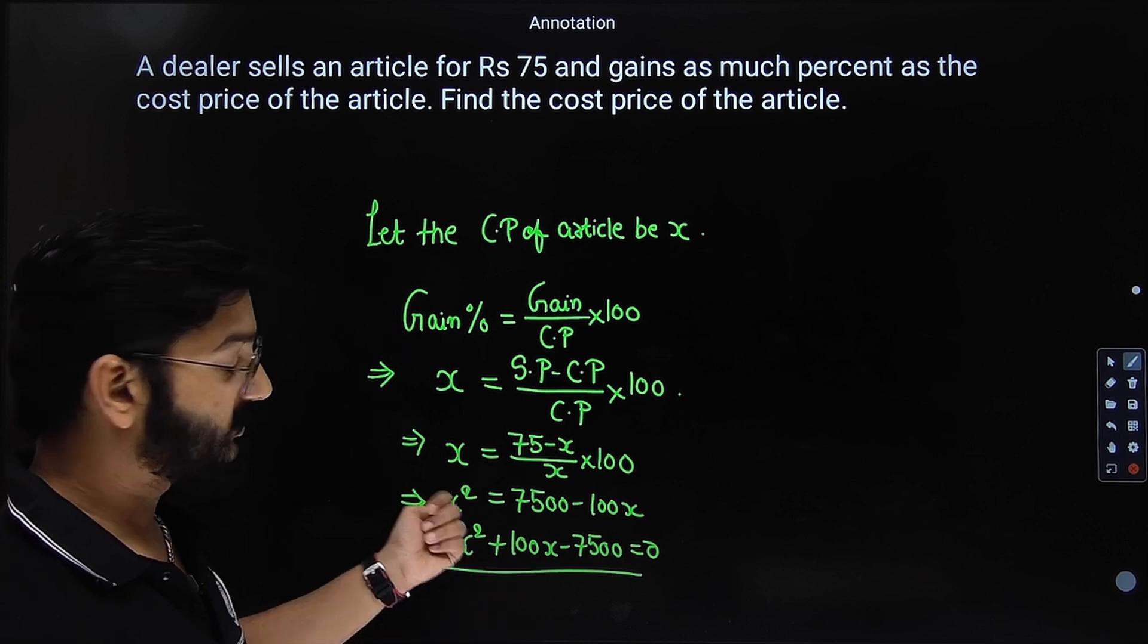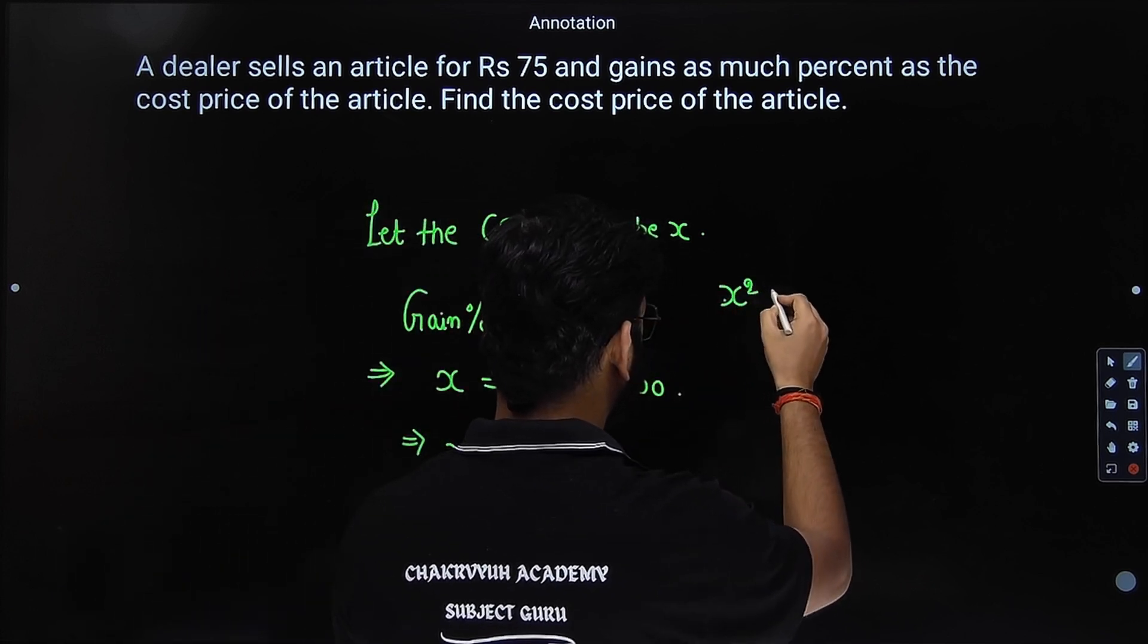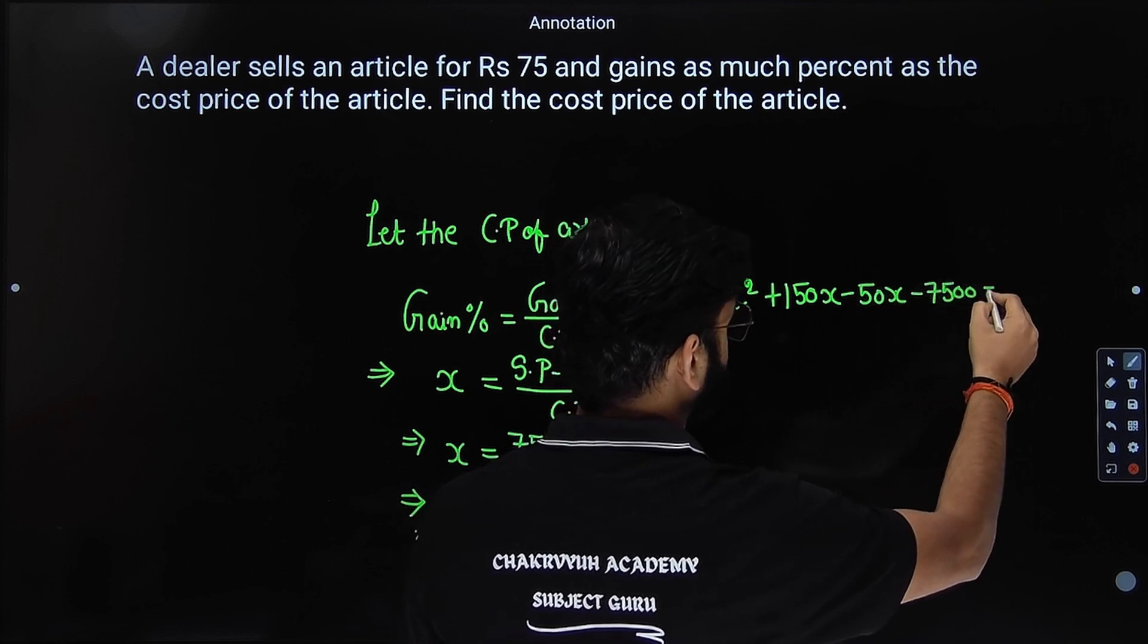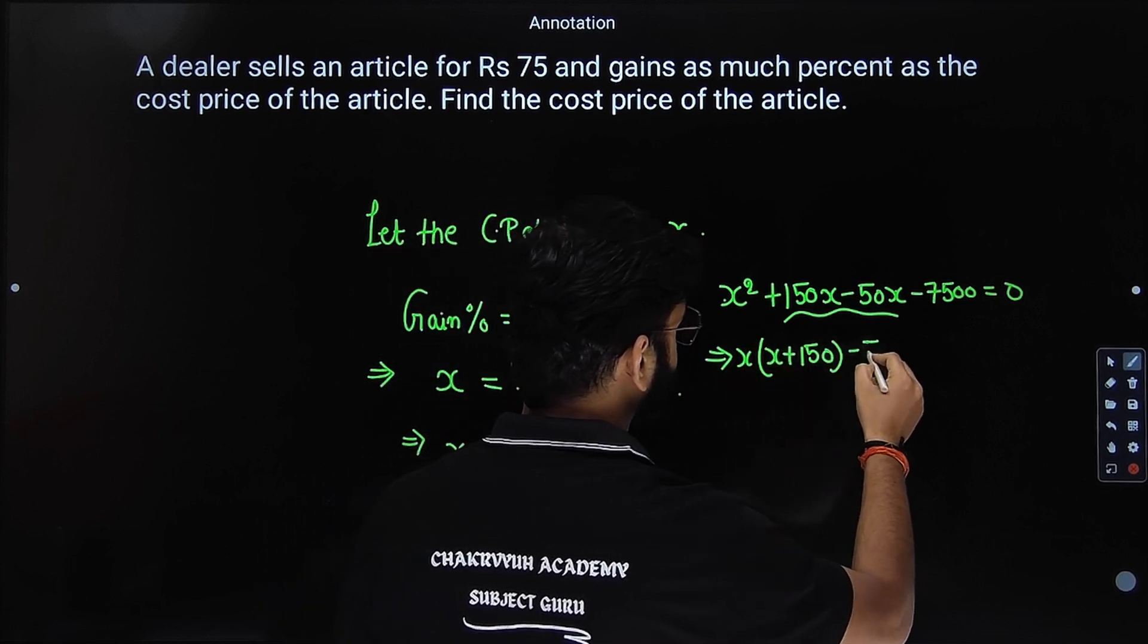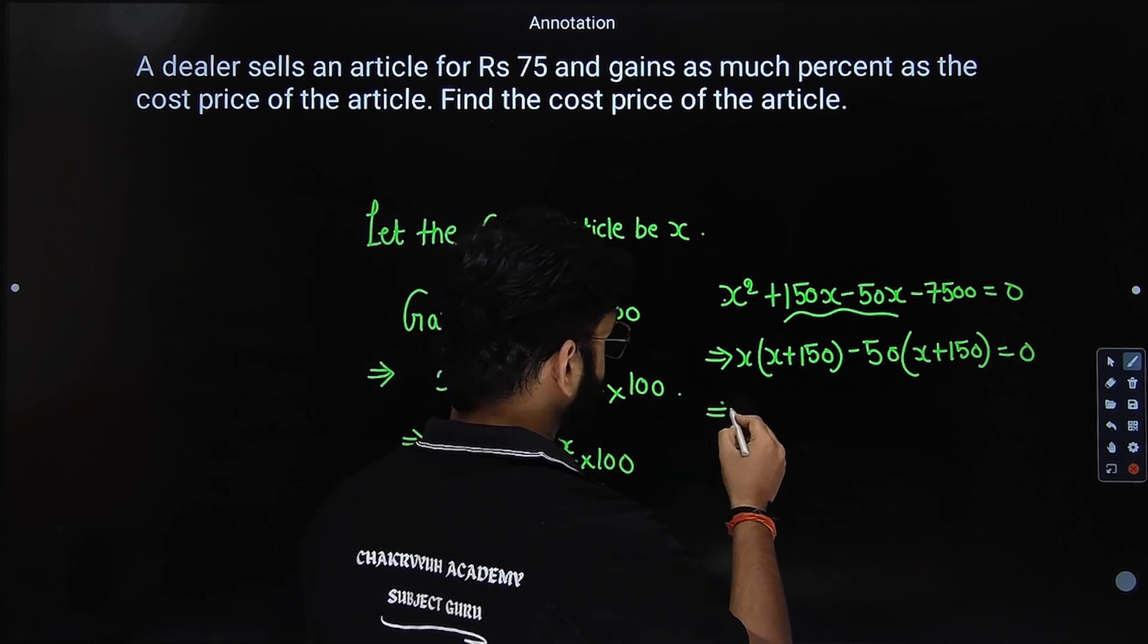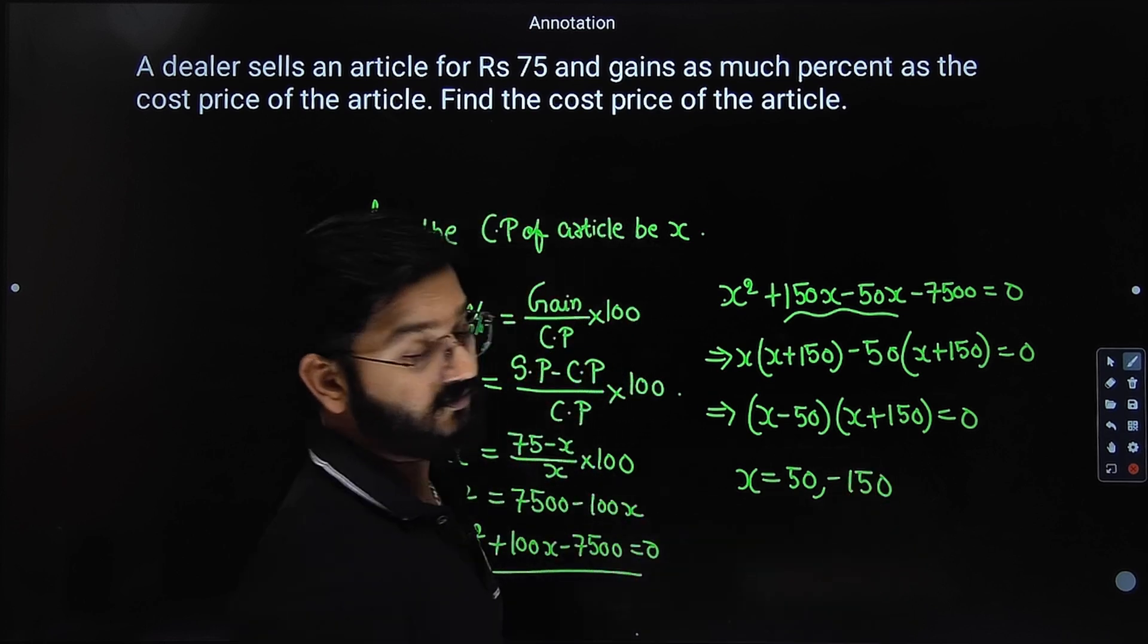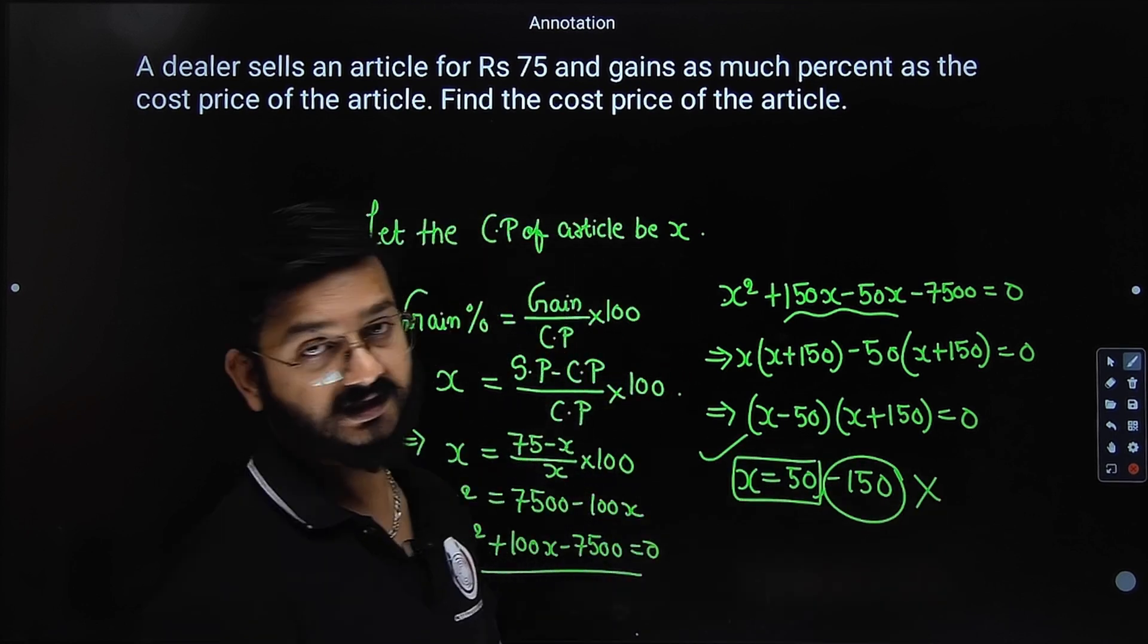So this is our quadratic equation. Let us solve this quadratic by using middle term splitting. So it will be x square plus 150x minus 50x minus 7500 equals to 0. Let us take x common. So x plus 150 minus 50, x plus 150 equals to 0. So what will be our factors? Factors will be x minus 50 into x plus 150 equals to 0. So x will be equal to 50 rupees or minus 150. Obviously, cost price cannot be negative. So what should be our answer? x equal to 50. This will be the answer. Minus 150 will be rejected.